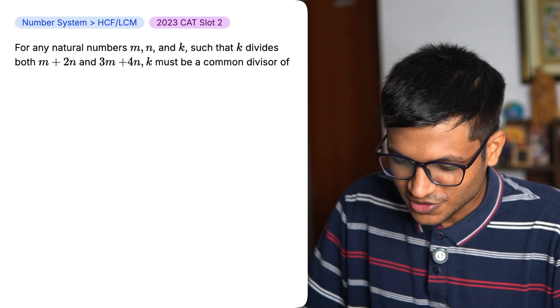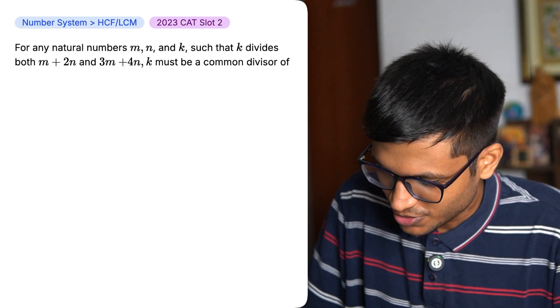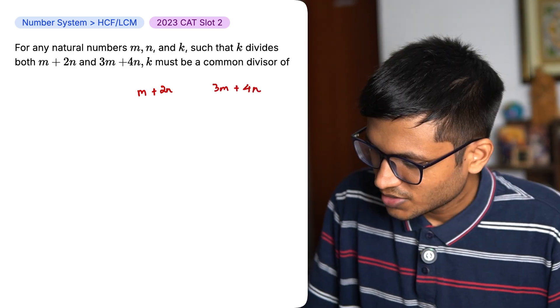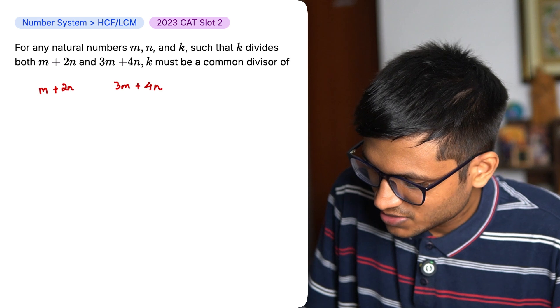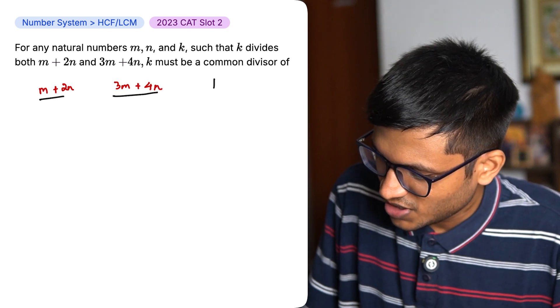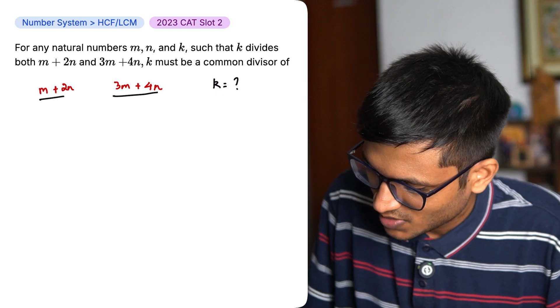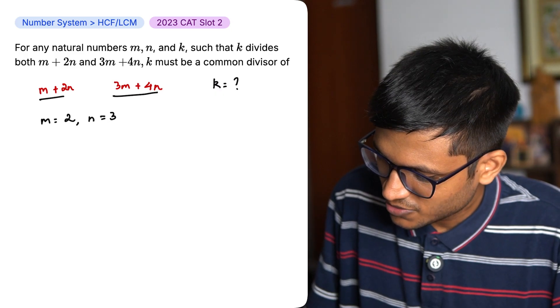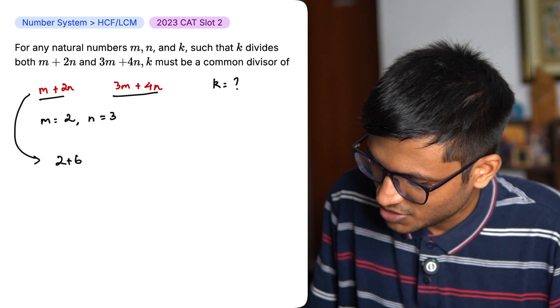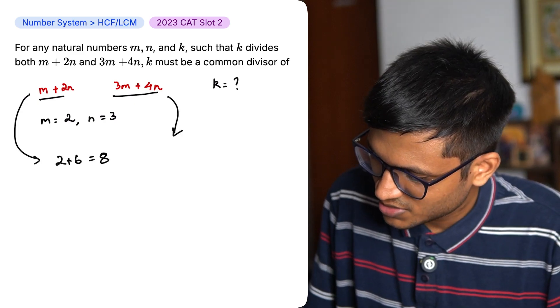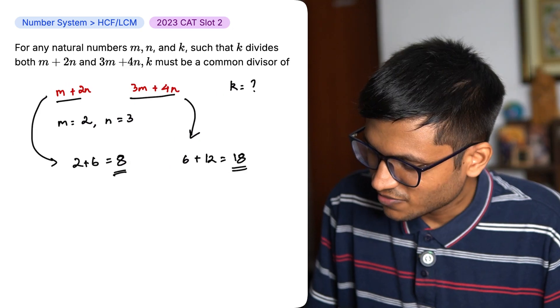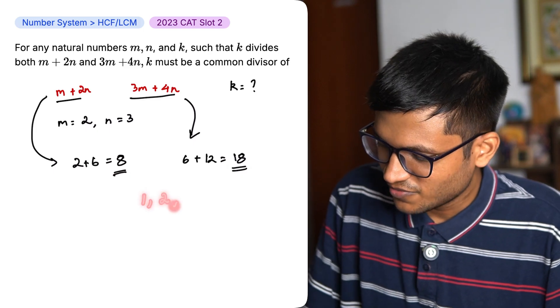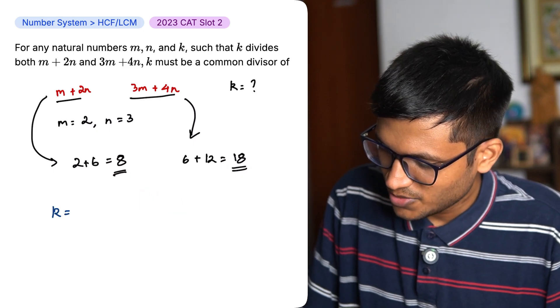For any natural number m, n and k such that k divides both m plus 2n and 3m plus 4n, k must be a common divisor of. The question tells us that k divides these two things. We do not know what k is. Let me just assume values. Let m equal to 2 and n equal to 3. So the first one becomes 2 plus 6 which is 8 and the second one 6 plus 12 which is 18. So k divides 8 and 18. So it can either be 1 or it can be 2 and 1 anyways divides every time. So the value of k is 2.